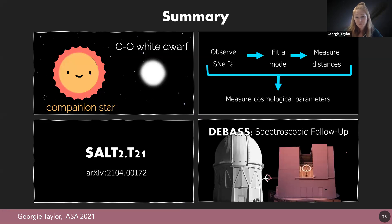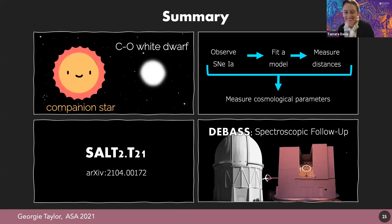Spectroscopic follow-up of DEBASS will be performed with WiFeS, the wide-field spectrograph on the ANU 2.3 meter. WiFeS is an integral field unit that records an optical spectrum at every pixel, allowing us to disentangle the supernova spectrum from its host galaxy. Our survey team at the ANU has been developing survey infrastructure and observing our first targets. In summary: we've seen how Type 1a supernovae are formed, measured, and used for cosmology; examined the SALT2 model and ways it can be improved; and learned about a new survey where Australia will play a crucial role in collecting a world-class sample of Type 1a supernovae.